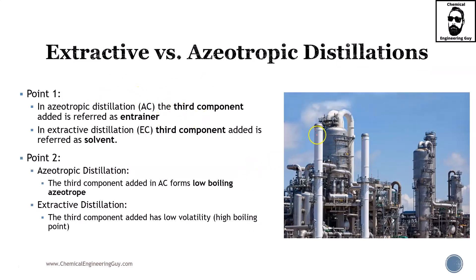Let us make it even clearer. Point one: in azeotropic distillation, the third component added — the MSA that we're adding — is referred to as the entrainer. In extractive distillation, the third component added is referred to as the solvent. Both of them are external materials which, in theory, will be recovered and are not part of our final product.